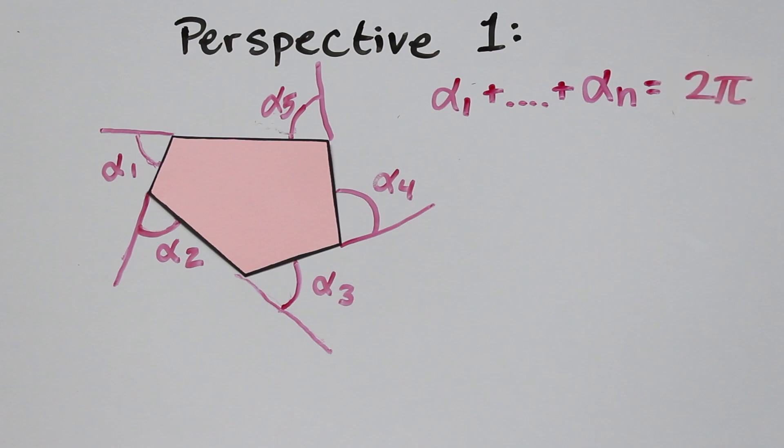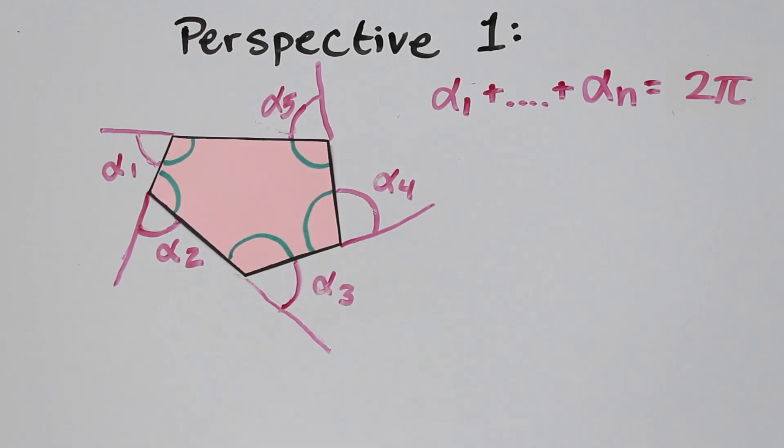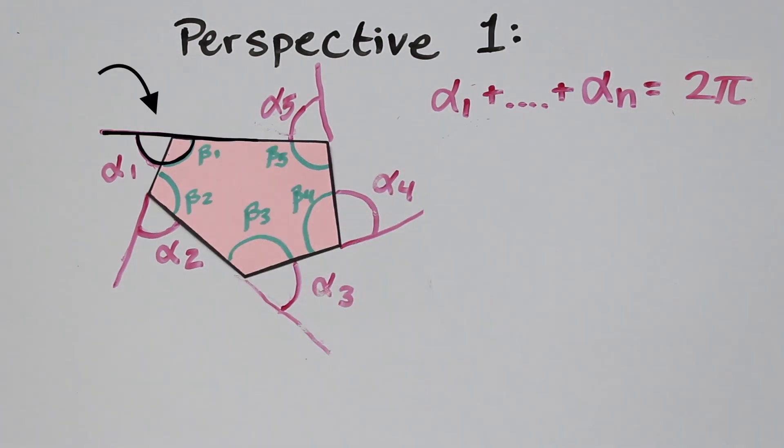We will just assume this fact from this perspective. We then label the interior angles with beta, beta 1, beta 2, and so on. See that alpha i and beta i are supplementary angles, so their sum is 180 degrees, or pi.